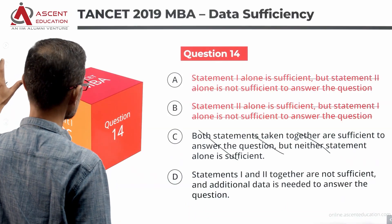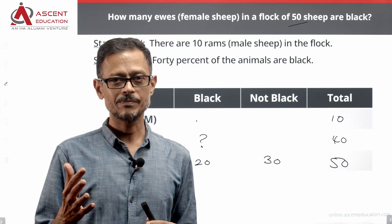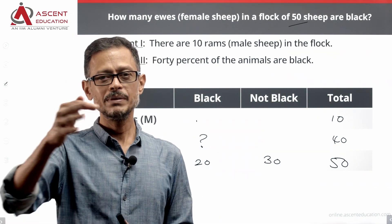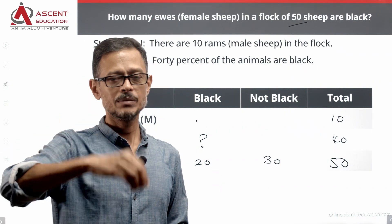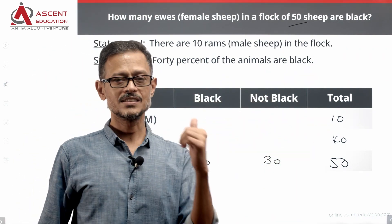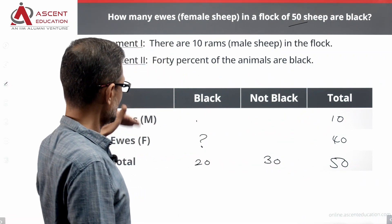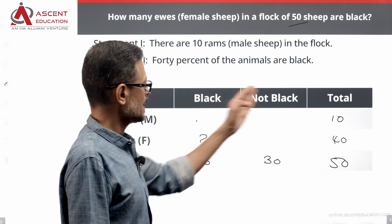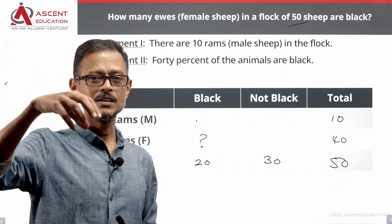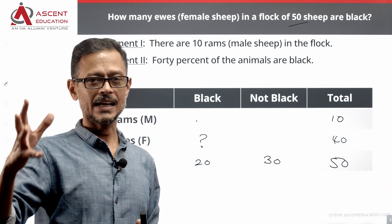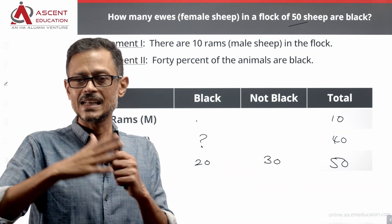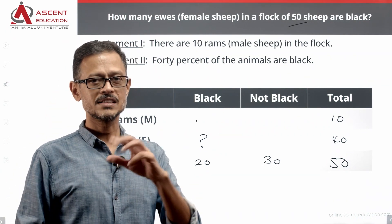The grid format will quickly run you through the solution. We need to fill out the data in two categories: color-based (black vs. not black) and sex-based (male vs. female). This works for other two-category problems too — for example, engineer and non-engineer, MBA and non-MBA, men and women. When a given group is broken down into two broad categories based on two different parameters, the grid format is the quickest way to solve the question.